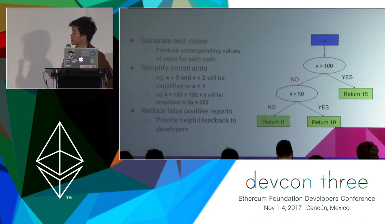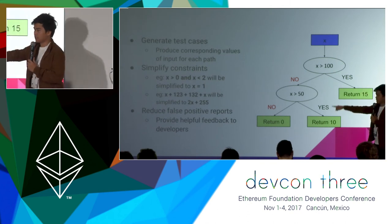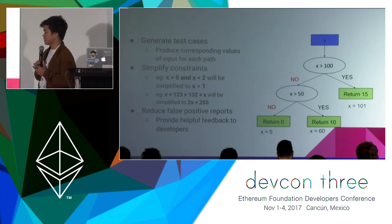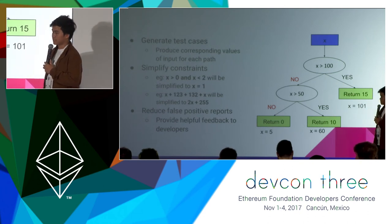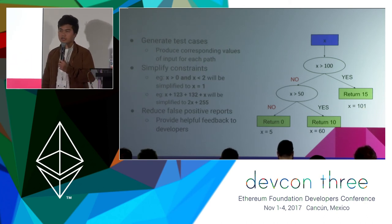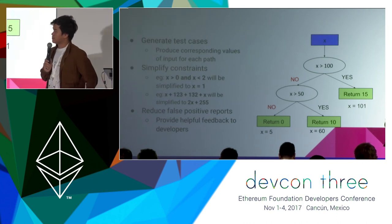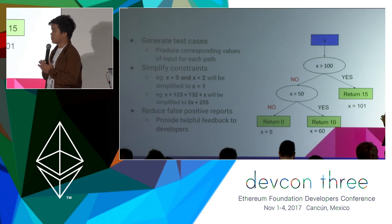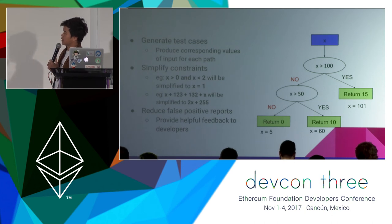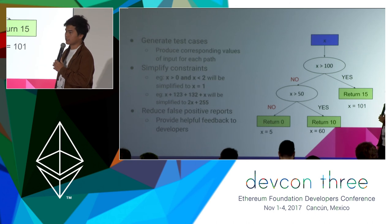There are a bunch of new features that we are planning to add. The first one is to generate all the test cases — because Oriente visits all the possible paths of the program and records all the behaviors, it is possible for Oriente to generate the corresponding input that drives the program to the same path. You can use all the generated inputs as test cases for your smart contract in frameworks like Truffle. We also plan to simplify all the constraints in the path condition — for example, if you have two conditions like x is greater than zero and x is less than two, we can simplify it to x equals one. That will reduce the time we query the solver or theorem prover.